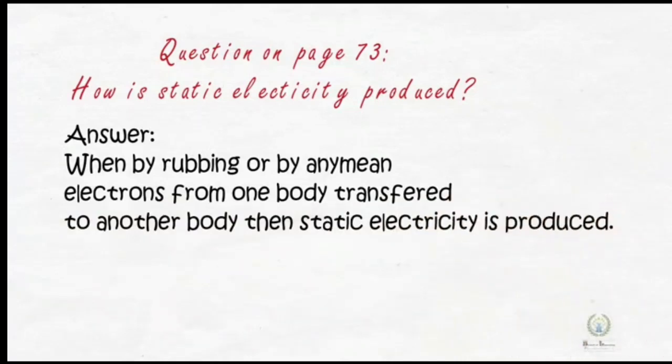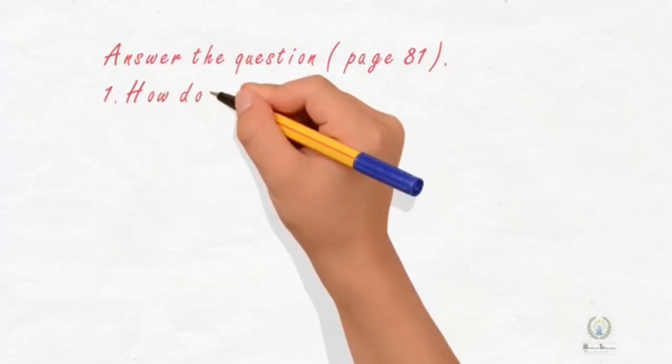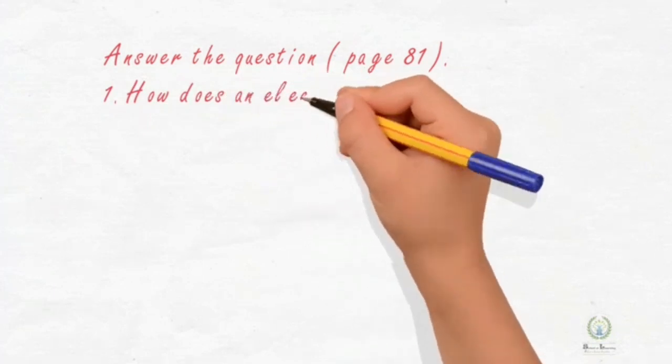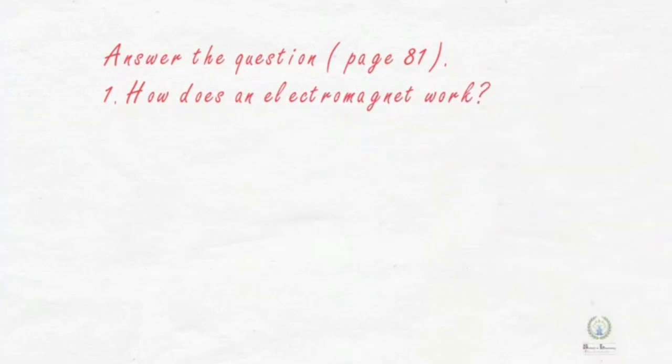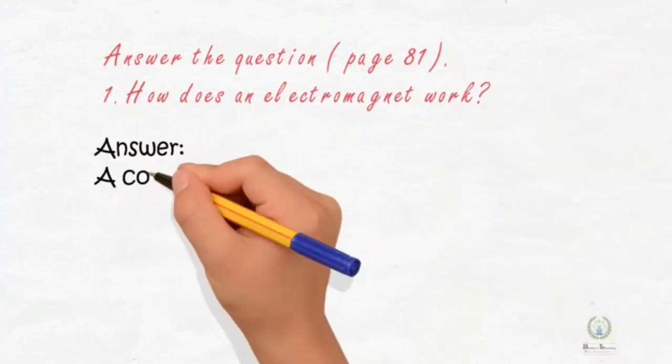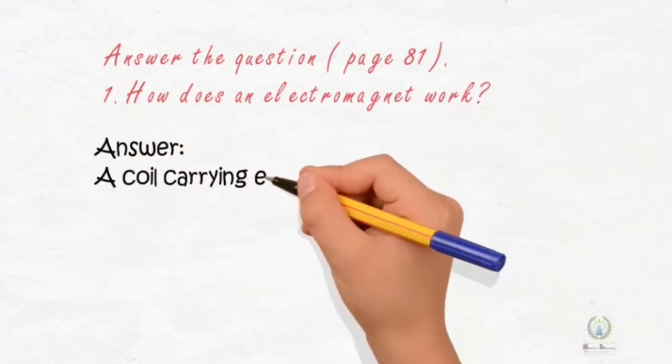Answer the question which is given on page 81. Question number one is: how does an electromagnet work? We can write the answer is: a coil carrying electric current.